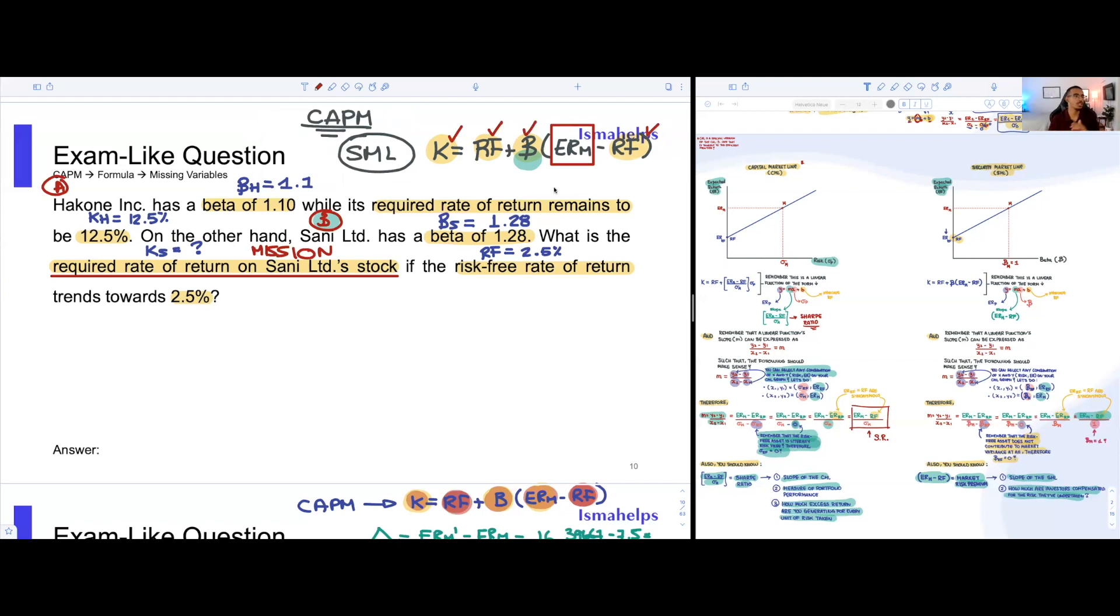Already here, we notice that we're missing something pretty important. We're missing the ERM, the market risk premium. But we have everything else for Hakone's stock. When you do these questions, you want to be like some sort of problem solver, like a detective. You really want to identify the missing pieces of the puzzle. What we can do is use the information we have on Hakone's stock to solve for this missing piece of the puzzle, ERM, and then plug it in within our formula for Sani's required rate of return.